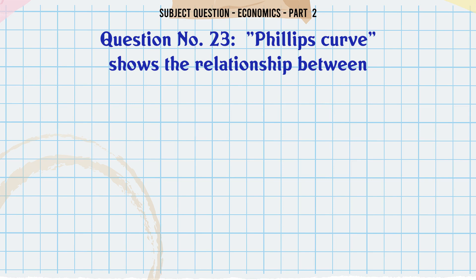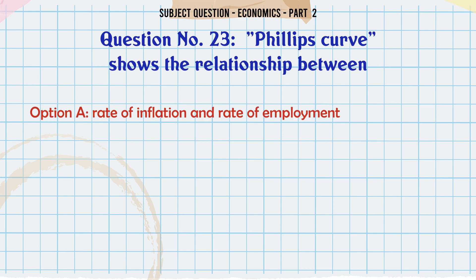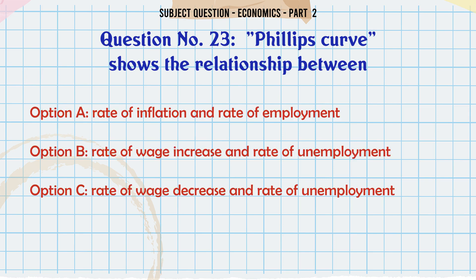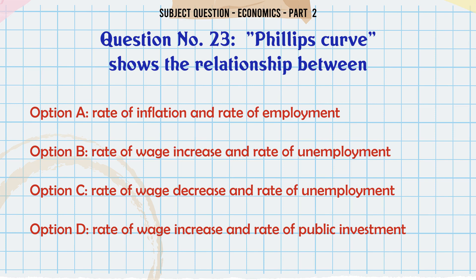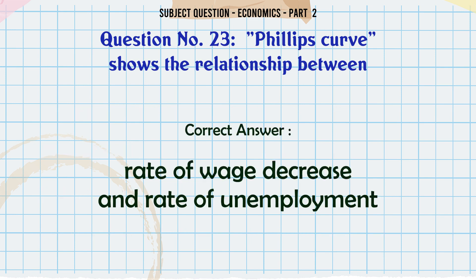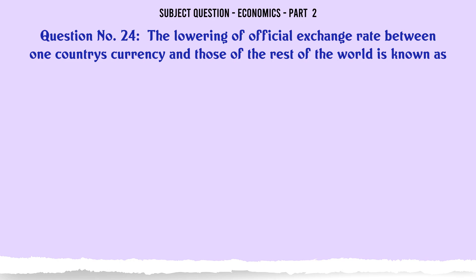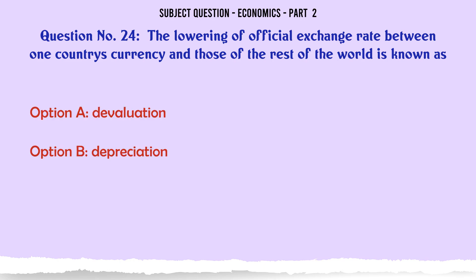Phillips curve shows the relationship between: A. Rate of inflation and rate of employment. B. Rate of wage increase and rate of unemployment. C. Rate of wage decrease and rate of unemployment. D. Rate of wage increase and rate of public investment. The correct answer is: Rate of wage decrease and rate of unemployment.